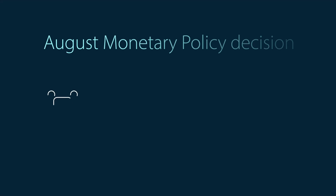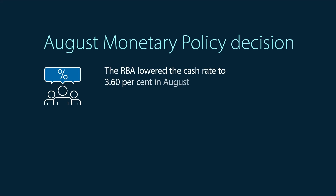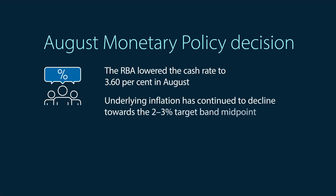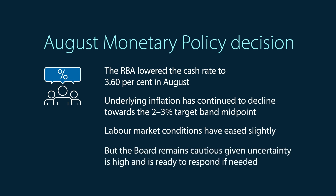Let's sum up. The board decided it was appropriate to lower the cash rate. Underlying inflation has continued to decline back towards the midpoint of the 2–3% target range, and labour market conditions have eased only slightly, and as expected. However, the outlook remains uncertain, and the board will continue to watch the data closely and monitor how risks are evolving. The board noted that monetary policy is well placed to respond to global developments if they were to impact growth and inflation in Australia.